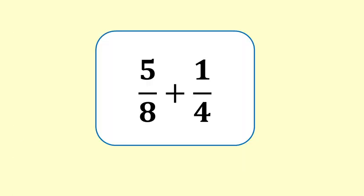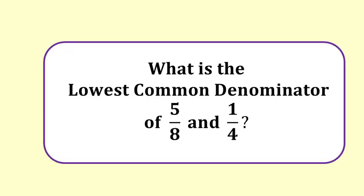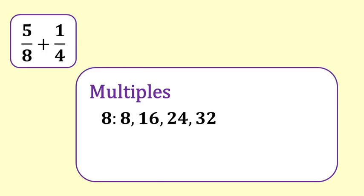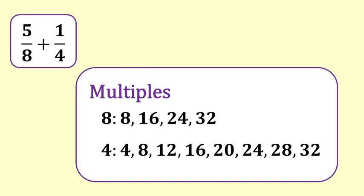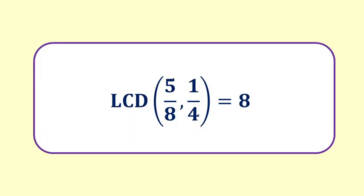Here is another worked example — try it yourself first. Five eighths plus one fourth: what is the least common denominator? We list the multiples. Multiples of eight: eight, sixteen, twenty-four, thirty-two. Multiples of four: four, eight, twelve, sixteen, twenty, twenty-four, twenty-eight, thirty-two. Eight is the smallest number to occur in both sets — you can see this on the multiplication tables. The lowest common denominator of five eighths and one fourth is eight.